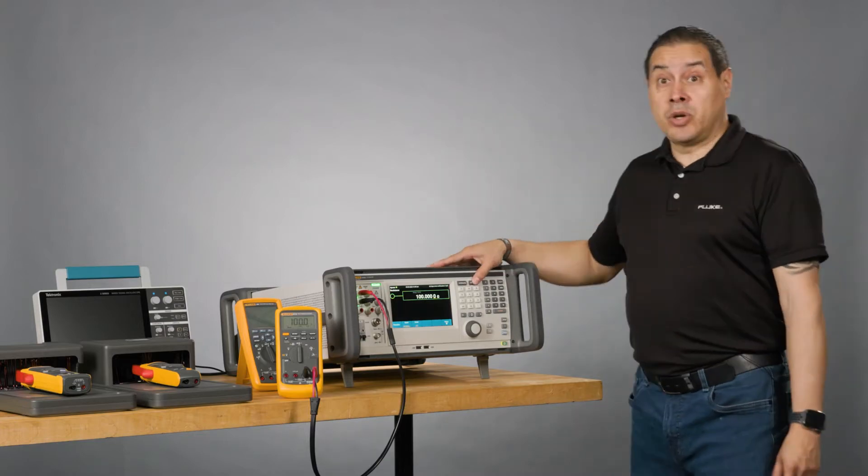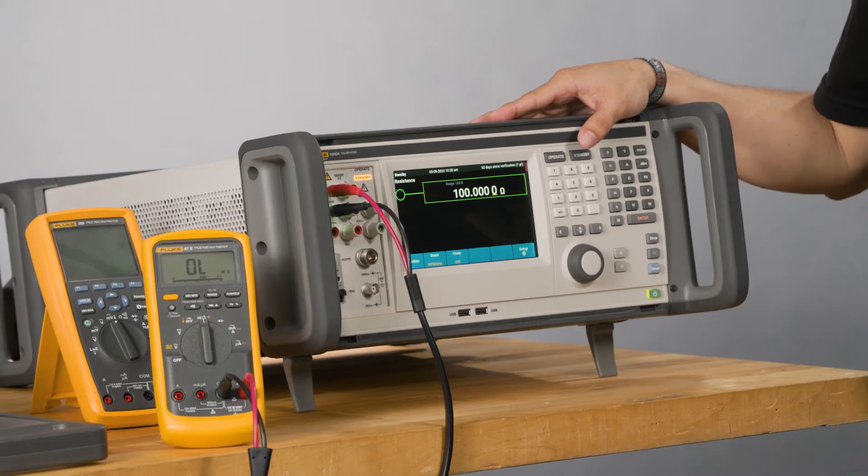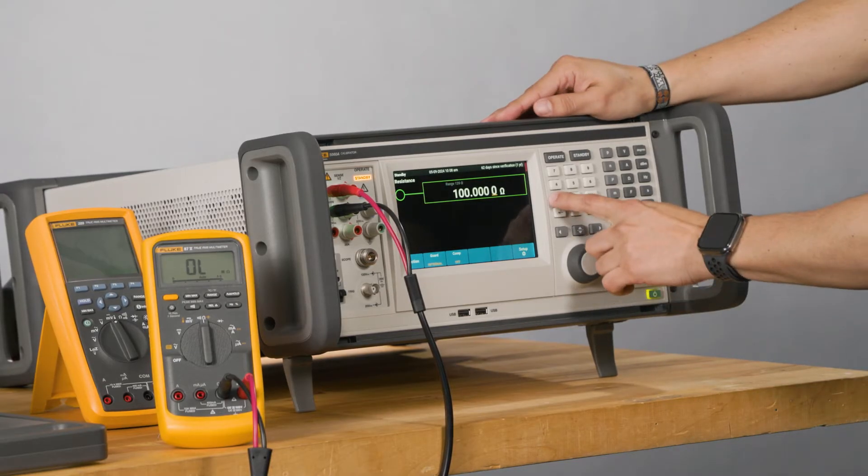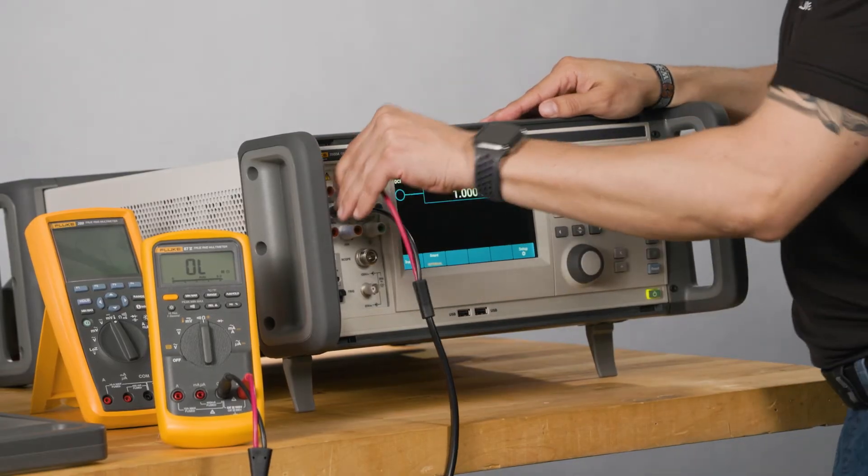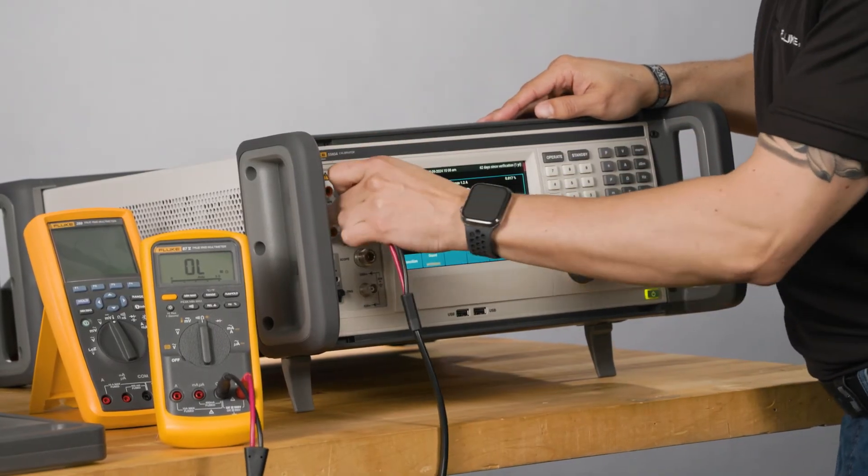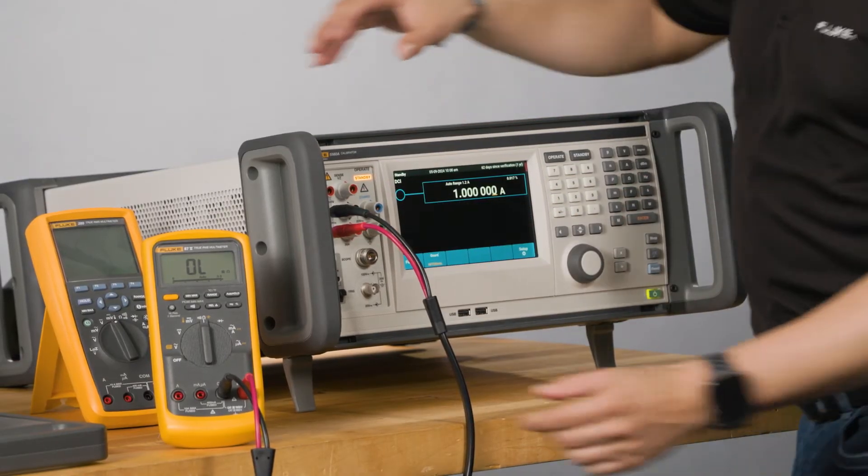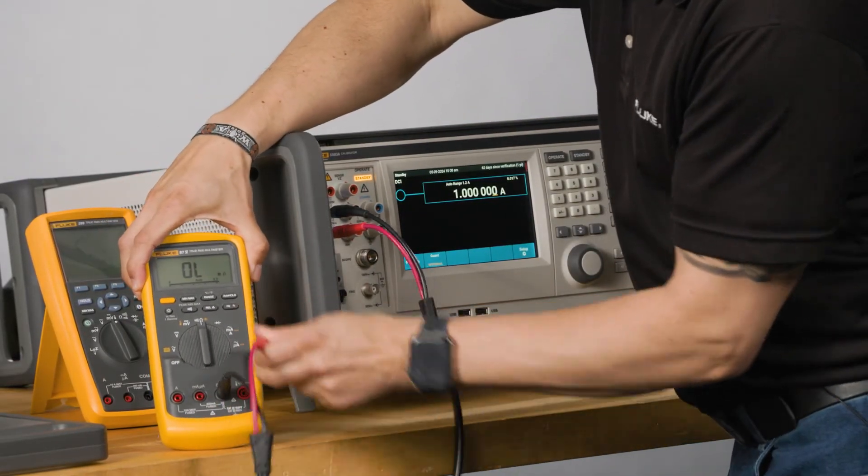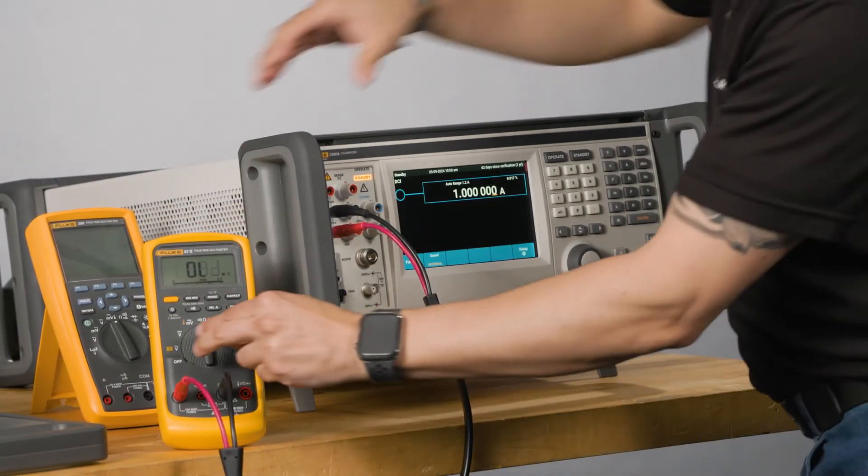And then, I'm done with resistance. I need to stop and change the connections because I'm going to do current. So one amp. Don't do it now. Wait. I need to change the connections here. Now indicated in blue. Visual management. And I need to change the leads here. My DMM. In this case, I'm going to use that.